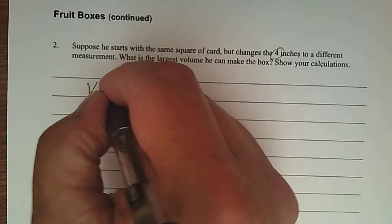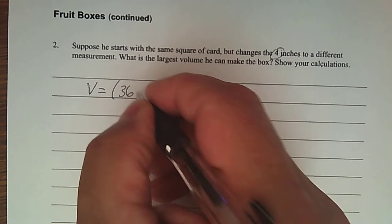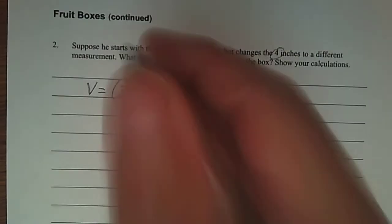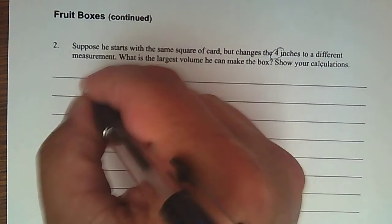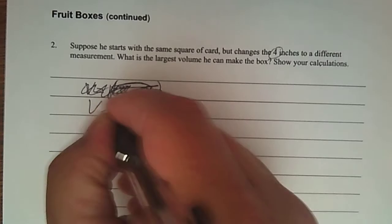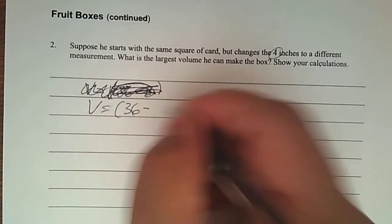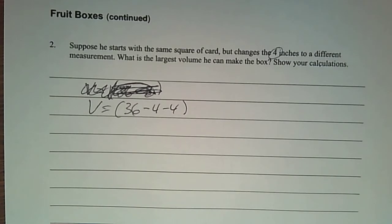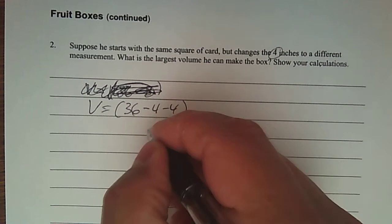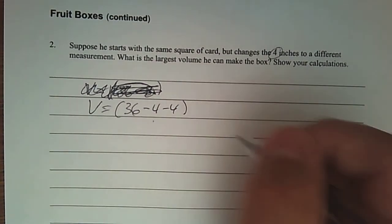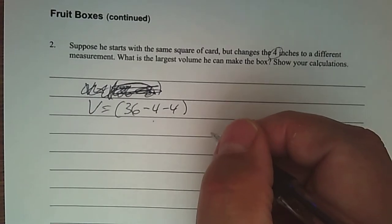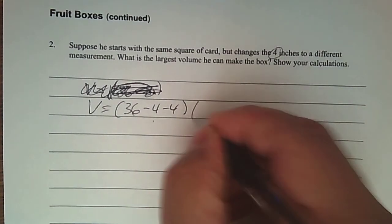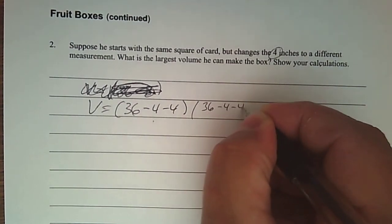I want you to remember how we found the volume before with four. So with four, I went 36 and I took away eight. Let me back up here so you can totally see it. I took 36 and I took away four and I took away four again. And that was the length of it.